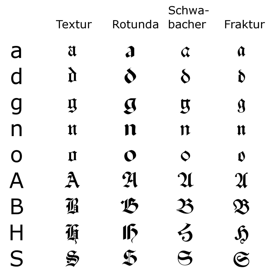Besides the 26 letters of the ISO Basic Latin alphabet, Fraktur includes the eszett, vowels with umlauts, and the long s. Some Fraktur typefaces also include a variant form of the letter R known as the R rotunda, and many include a variety of ligatures which are left over from cursive handwriting and have rules for their use.